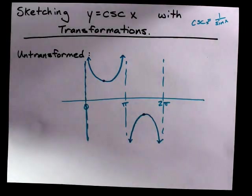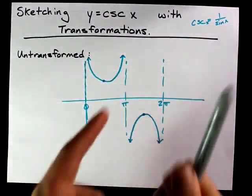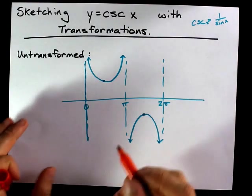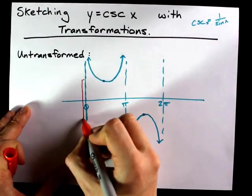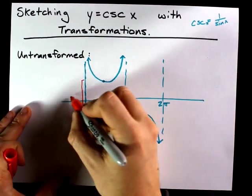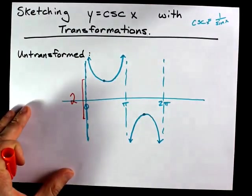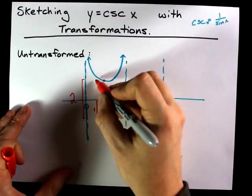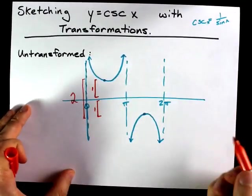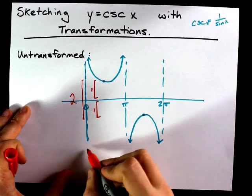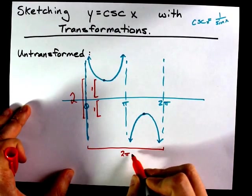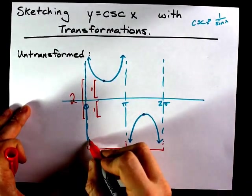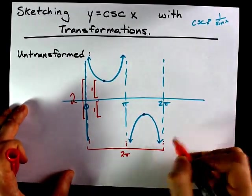The things and properties about this that I want you to know, in order to be able to graph this with transformations, is that the space in between the minimum and the maximum is 2 units tall. That's 1 unit above or below the middle each. I also want you to remember that it has a period of 2 pi and it has a vertical asymptote halfway between its beginning and end.